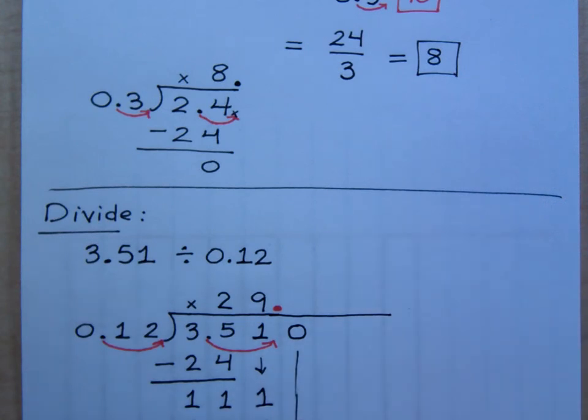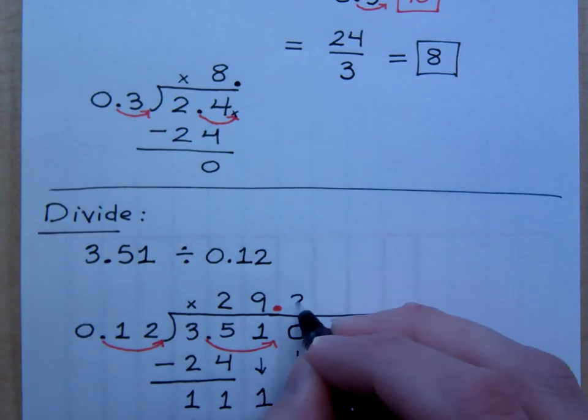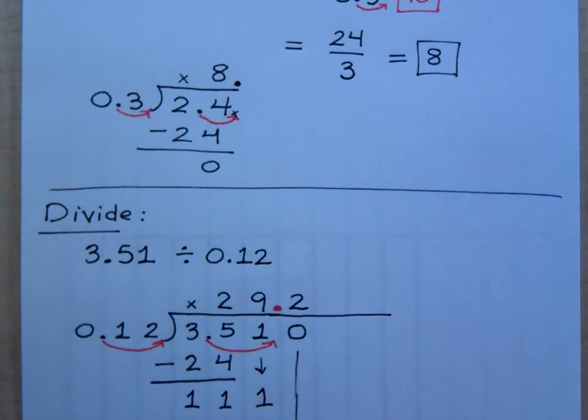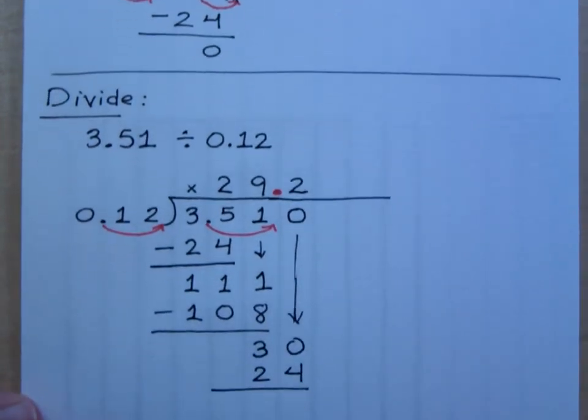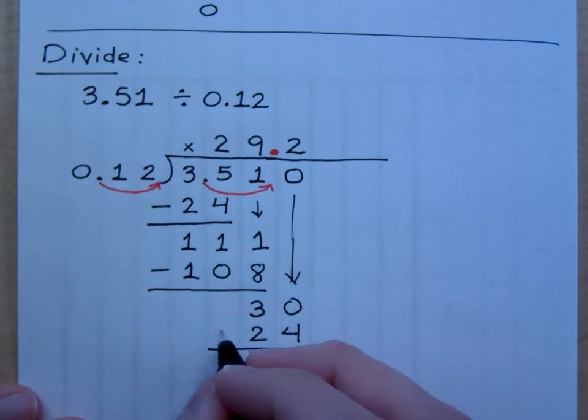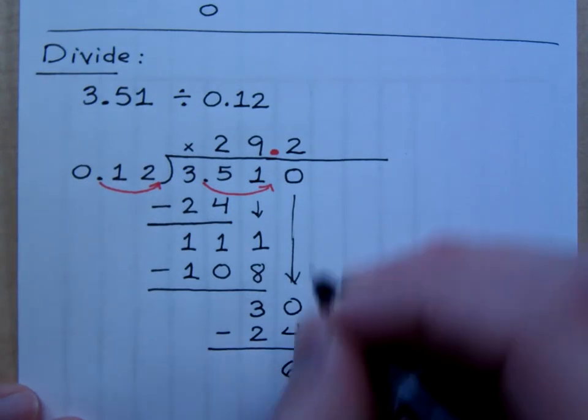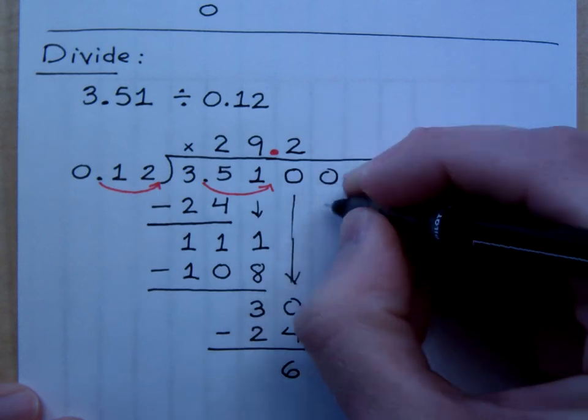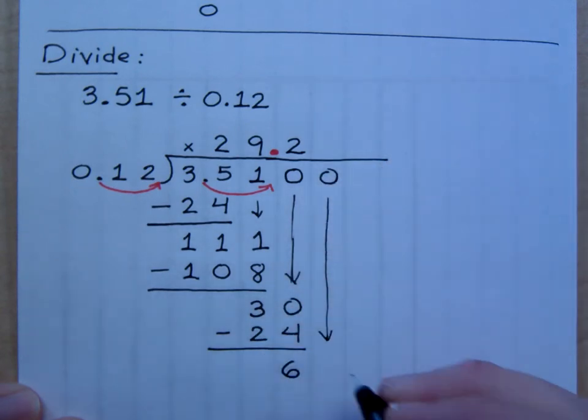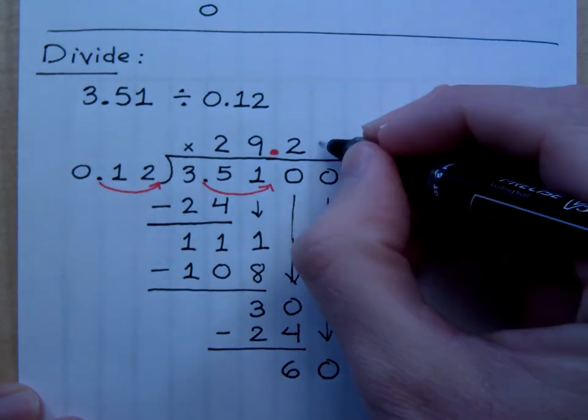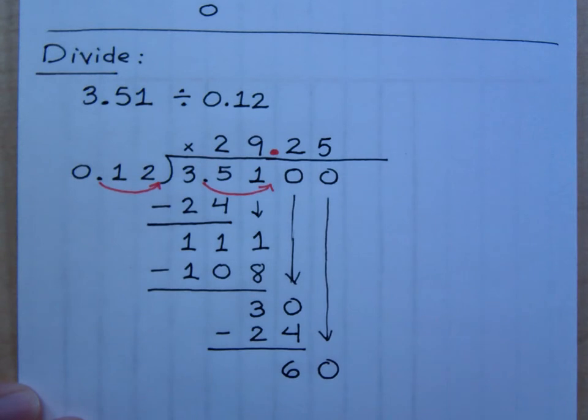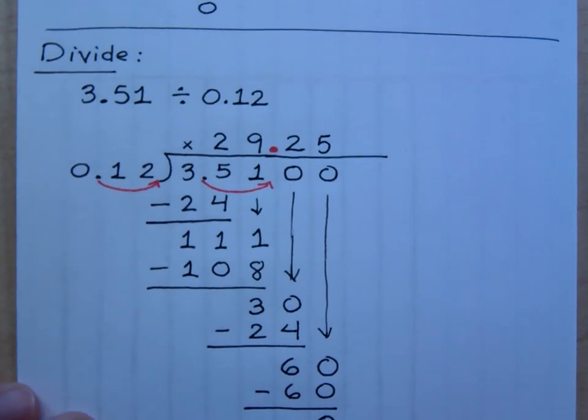So how many times does 12 go into 30? Now we're cooking. So 30 minus 24 gives me 6. Let's put another 0 here and bring that down. That's 60 and then 12 goes into 60 five times. Now we have a remainder of 0 so we're happy. Are you happy? Now, here's what I need you guys to see and understand here.